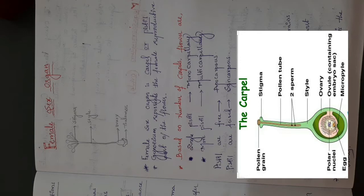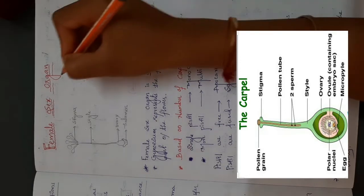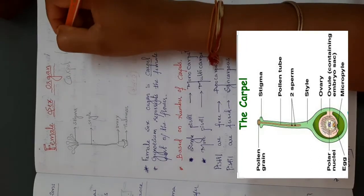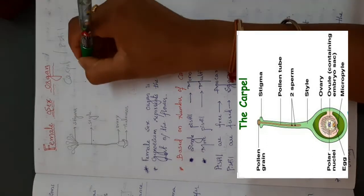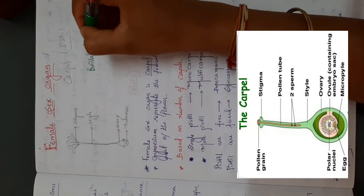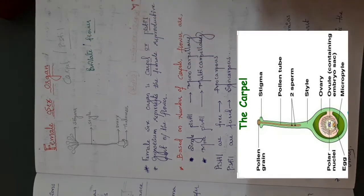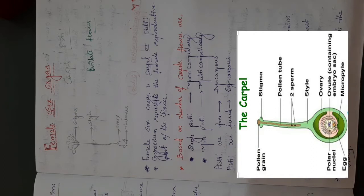Now we can discuss about the female sex organ, that is the carpel or pistil. Carpel or pistil is a female sex organ. In case of a unisexual flower, a flower which has only the female sex organ is called a pistillate flower. A group of carpels is called as a gynoecium.